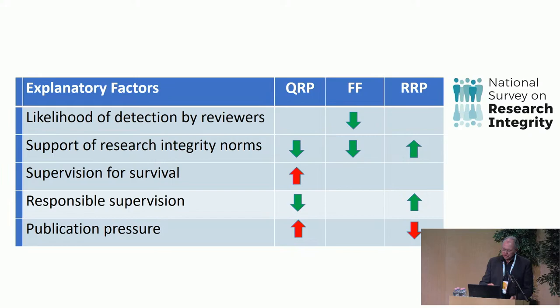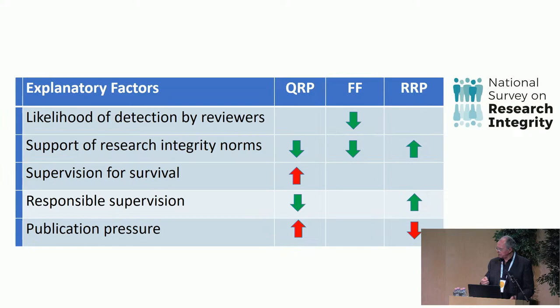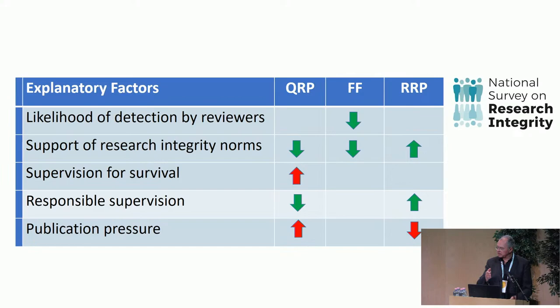When people support the research integrity norms — the Mertonian norms, which I'll show on the next slide — there are fewer questionable research practices, less fabrication and falsification, and more responsible research practices. There are two types of supervision scales. Supervision for survival means that people help you survive in academia as it is: they teach you how to cut corners, how to get the next grant, how to polish your paper by leaving out negative results, and how to get tenure by cheating a little. This is associated with more questionable research practices.